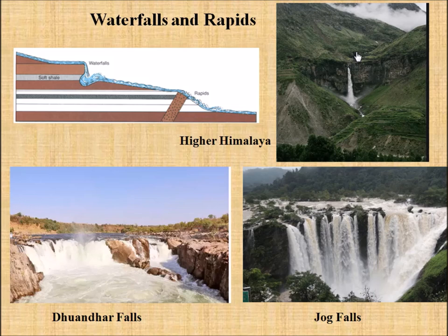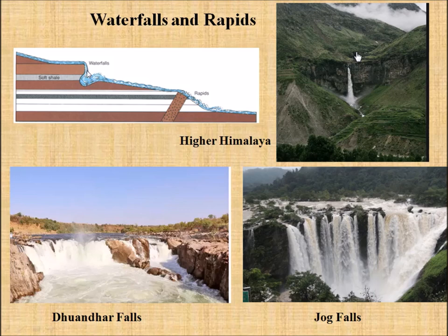Another type of landform is waterfalls and rapids. Waterfalls represent a sudden break in slope with vertical movement. As discussed under cavitation, when water falls, trapped air bubbles travel to the base of the plunge pool and explode on the rock floor, causing erosion. Rapids form where a more resistant rock does not erode like the surrounding material, causing a sudden change in gradient.